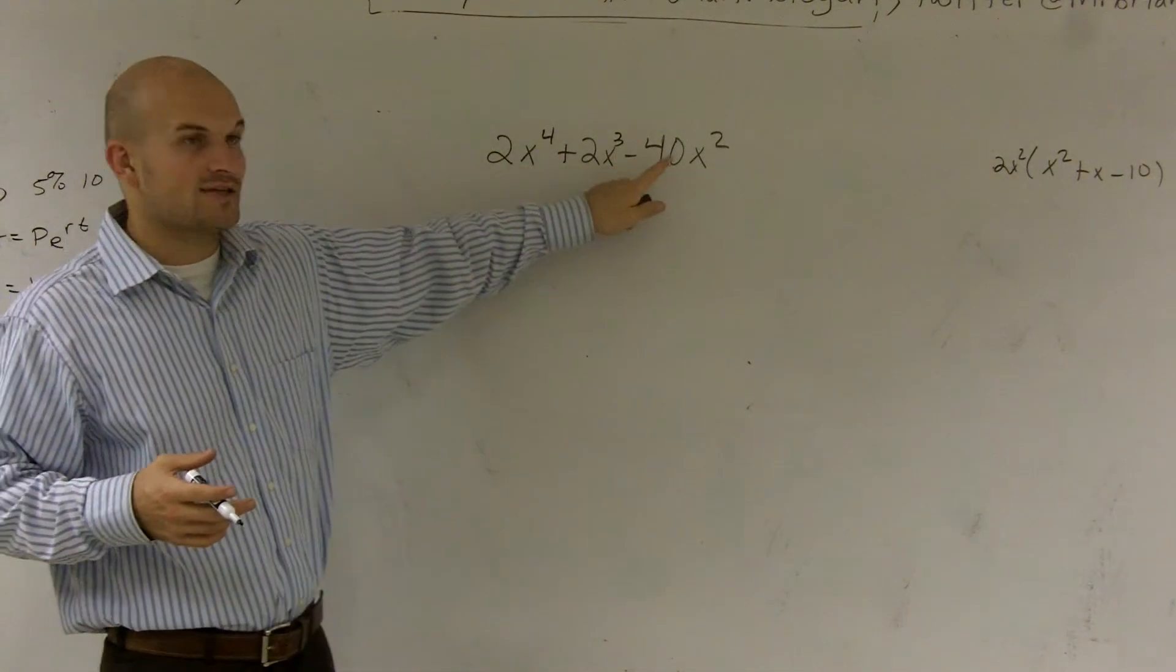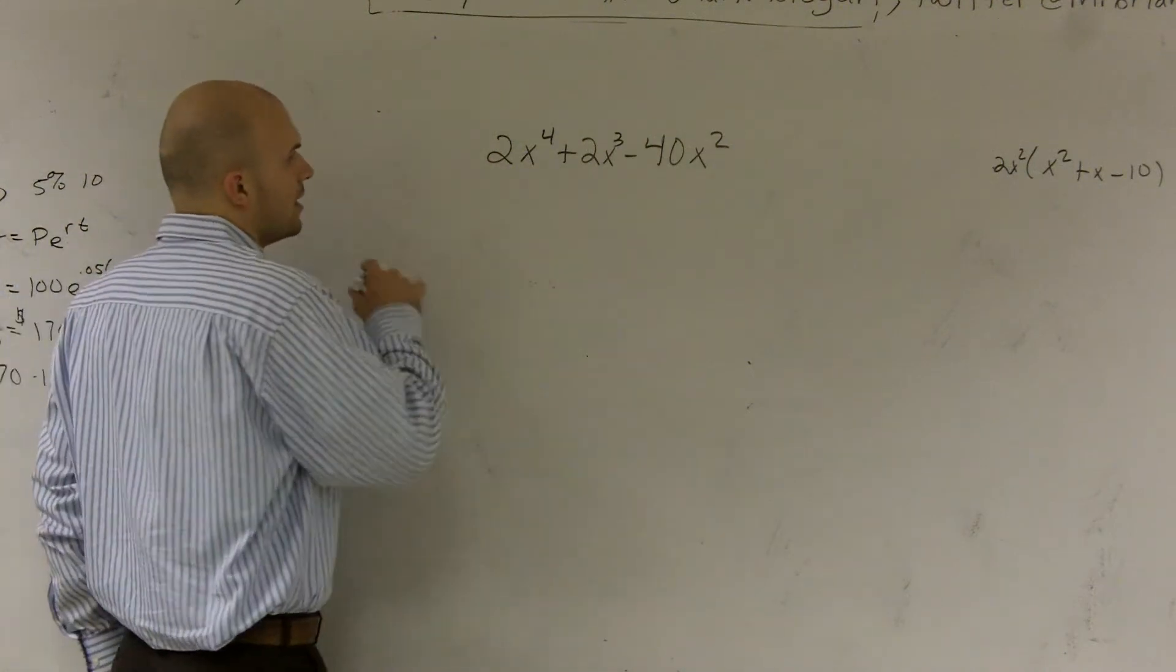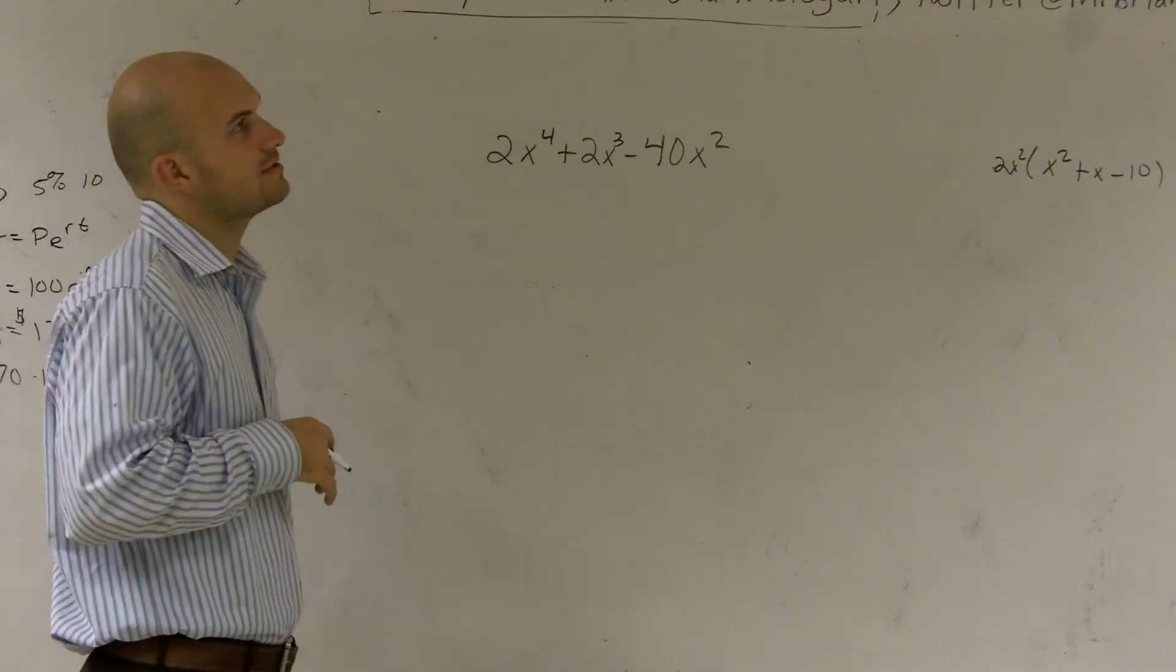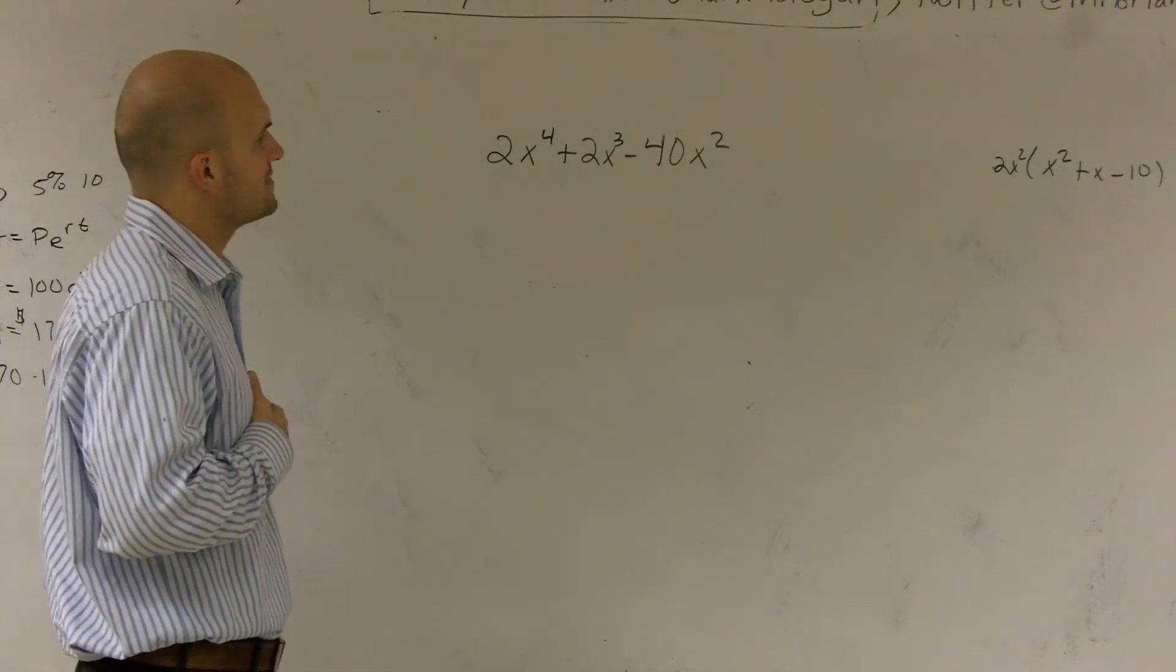This says 2, this says 2, and then 2 can be pulled out of 40. So, ooh, that's what it was. Never mind. I was thinking of two different numbers. I was thinking of 10.